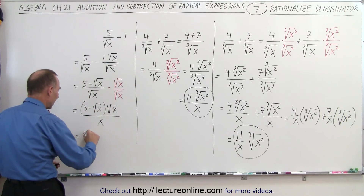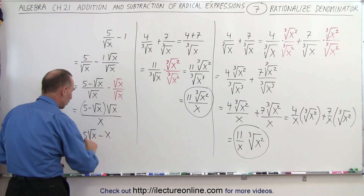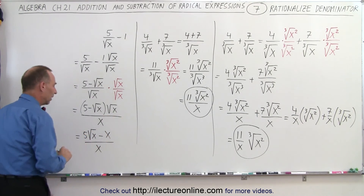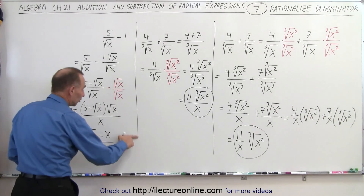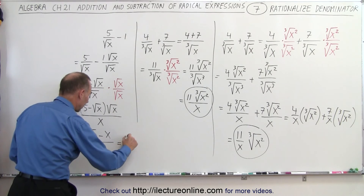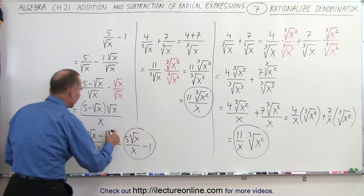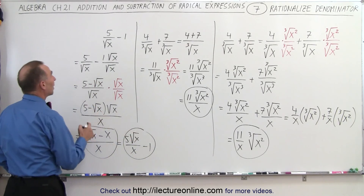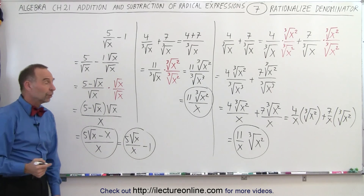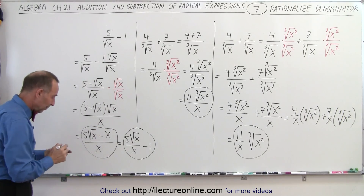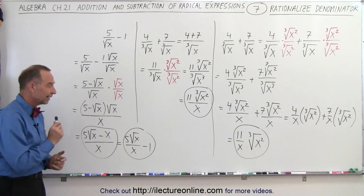When I do that, I get 5 minus the square root of x, times the square root of x in the numerator, divided by the square root of x times the square root of x, which is simply x. Multiplying this out: this becomes 5 times the square root of x, minus the square root of x times the square root of x — which is simply x — all divided by x. If I want to divide into the numerator, I could write it as 5 times the square root of x over x, minus 1. Either way, you get a simplified form where you don't have a radical in the denominator, and that is how it's done.